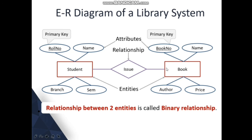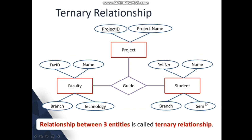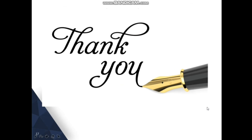When there are three entities — such as faculty, project, and student — connected by a single relationship, it is called a ternary relationship. For example, the relationship 'guide' connects faculty, student, and project, meaning the faculty guides the students about a particular project. When three entities are connected by a single relationship, it is known as a ternary relationship. Thank you.